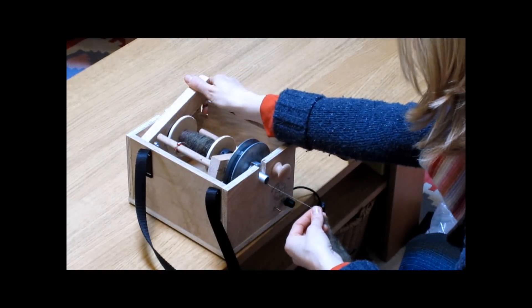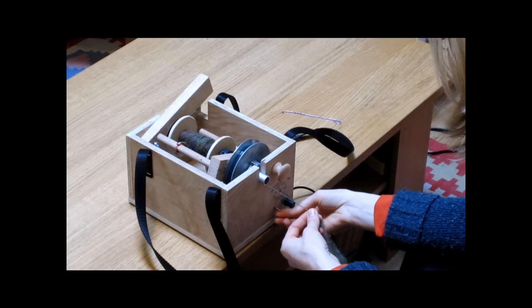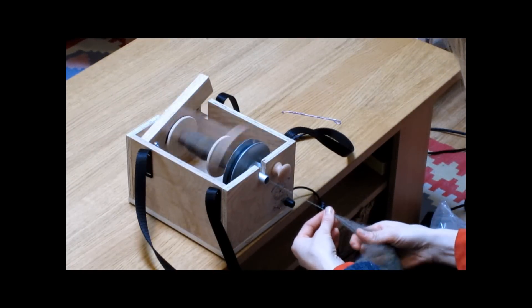We're now adjusting the tension. Moving the lever up reduces the amount of uptake, thus creating more tightly spun yarn.